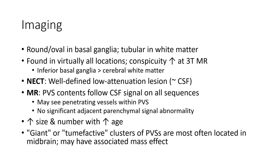Imaging characteristics: round or oval in basal ganglia, tubular in white matter, found in virtually all locations. Conspicuity is increased at 3T. Common locations include the inferior basal ganglia and cerebral bone marrow. On non-enhanced CT, they appear as low attenuation foci.